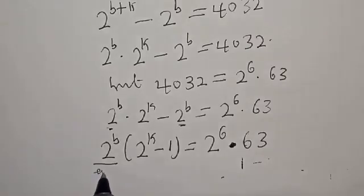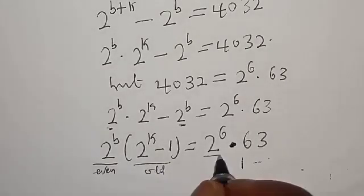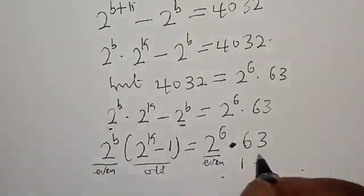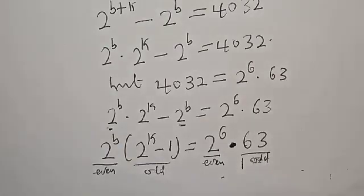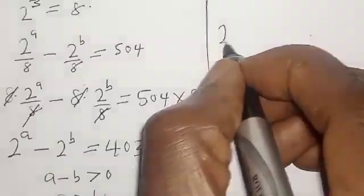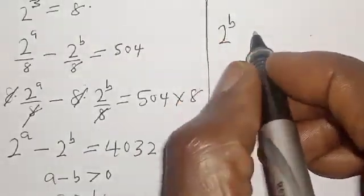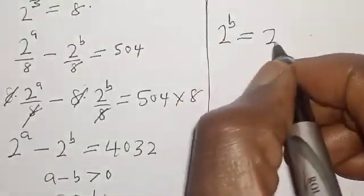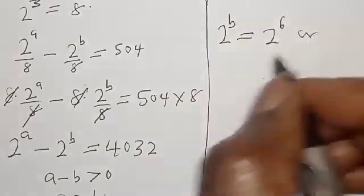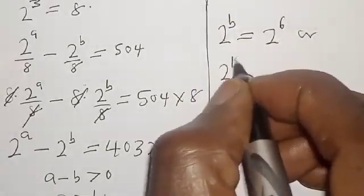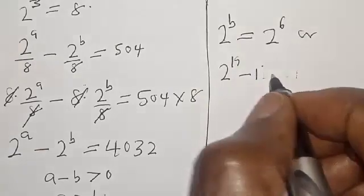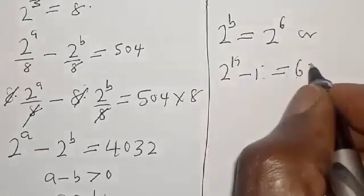Now from here, on the right-hand side, 2 raised to power 3 is even and 5 is odd. On the left-hand side, 2 raised to power b is even and 2 raised to power k minus 1 is odd. Let's compare the two sides.